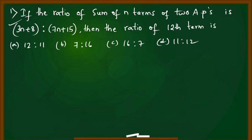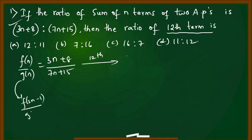Example: If the ratio of sum of n terms of two APs is (3n+8) to (7n+15), then find the ratio of 12th terms. The ratio of n terms is given as f(n)/g(n) = (3n+8)/(7n+15). We have to find the ratio of 12th term using f(2n-1)/g(2n-1).